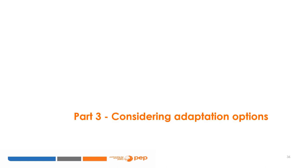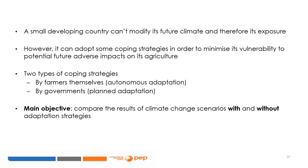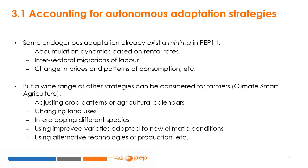The last issue we focus on is adaptation options to climate change. A small developing country cannot modify its future climate and exposure to climate change-related effects. However, some coping strategies could help it minimize its vulnerability over time to both climate change and variability. In economic literature, it is common to distinguish between two types of coping strategies: those used by farmers themselves as autonomous adaptation to changing conditions, which are a natural part of their behavior, and those implemented by governments for reducing the effects of climate change. The main motivation is to compare the results of climate change scenarios with and without adaptation strategies. Some endogenous adaptation already exists in the PEP1T model — for example, accumulation dynamics based on land rental rate, intersectoral migrations of labor, changes in prices and patterns of consumption.